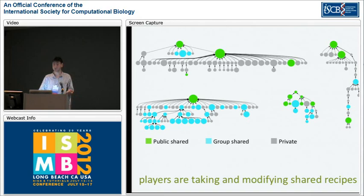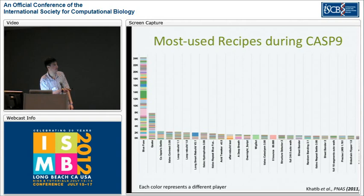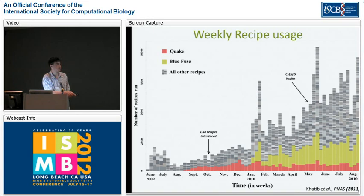We wanted to see which are the most used recipes. During the CASP9 experiment, players used many, many recipes — each color represents a different Foldit player. It became evident that there are two outliers used far more than all the others: BlueFuse, used many times by lots of different players, and Quake. Looking at weekly recipe usage from when we introduced recipes, Lua scripting, and through CASP, you can see Quake was used pretty much consistently since it started, and then BlueFuse when it was written.